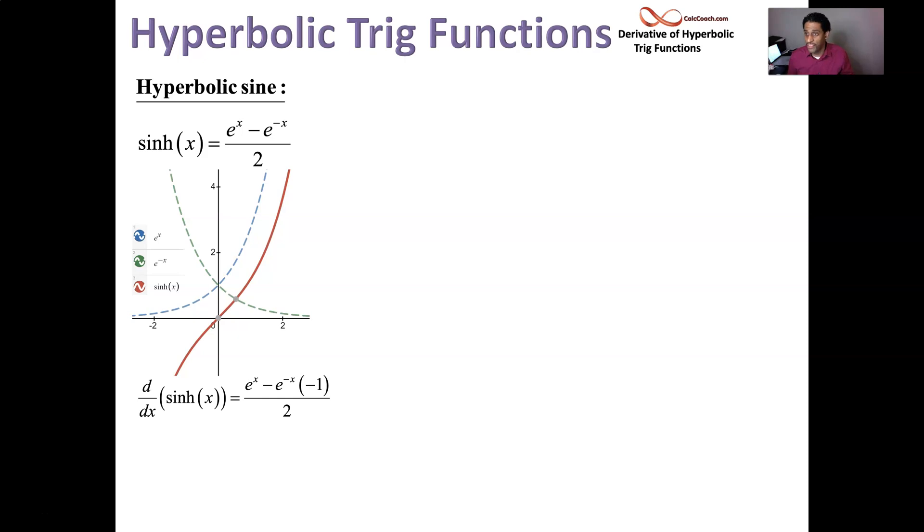Its derivative then, we don't have to use a quotient rule. We keep the one-half as a factor. Focus on numerator. e to the x is derivative of e to the x. The minus sign stays. e to the minus x is derivative of e to the minus x, but then times minus 1.